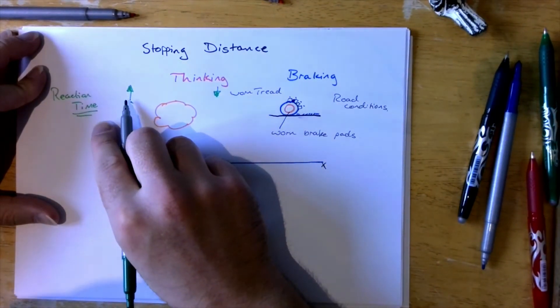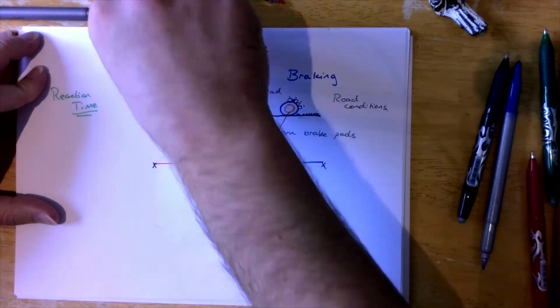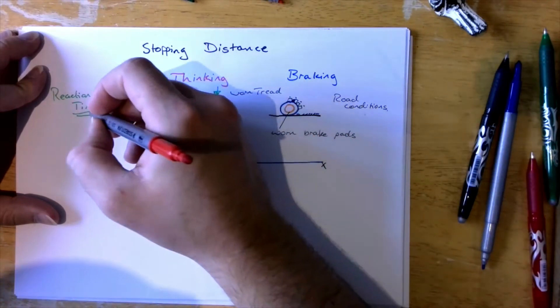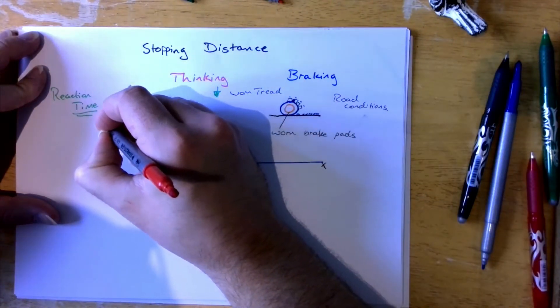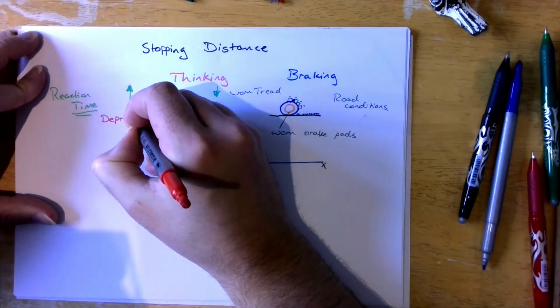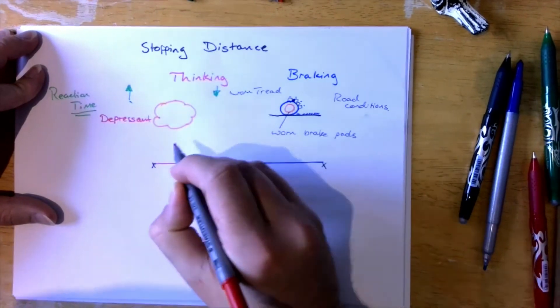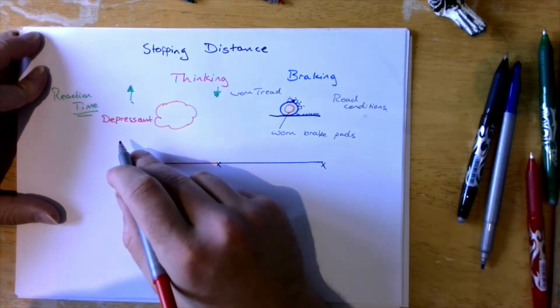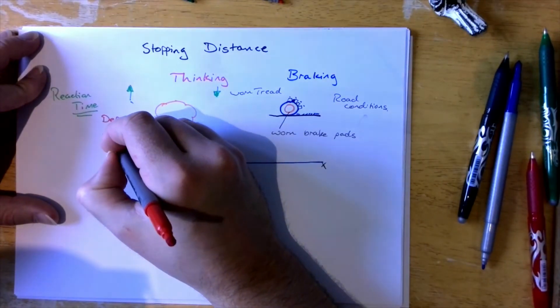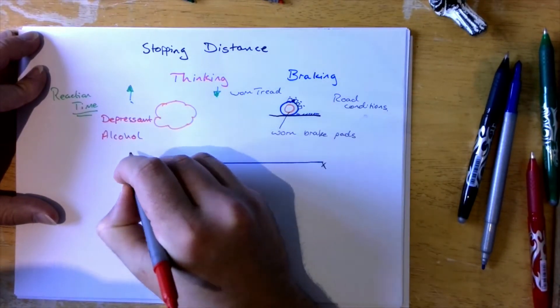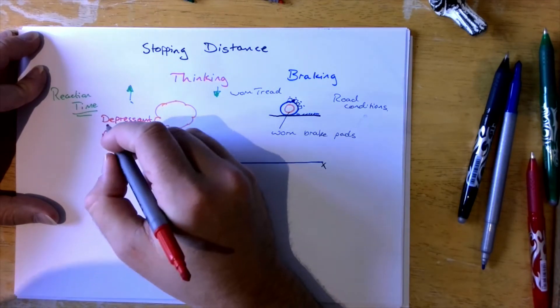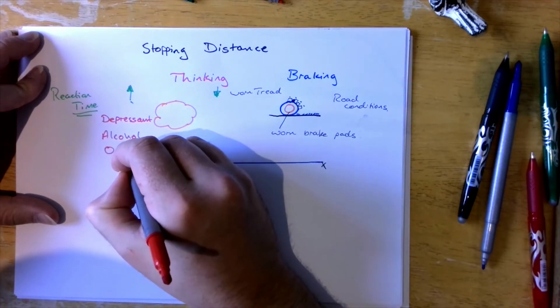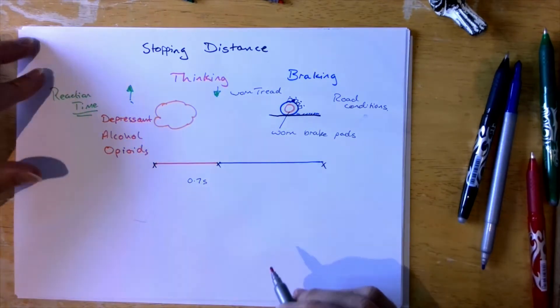So what things will increase the reaction time? Well if you ever partake of anything like a depressant which is a class of chemicals which affect the nervous system by slowing down the neurotransmitters. Common depressants, alcohol and any kind of opioids. So class A drugs, painkillers.